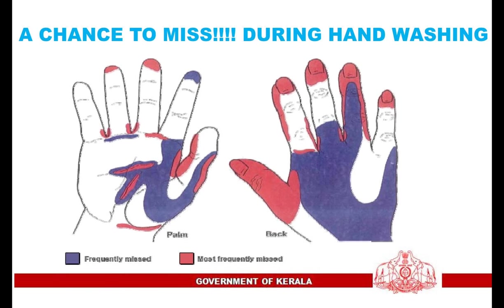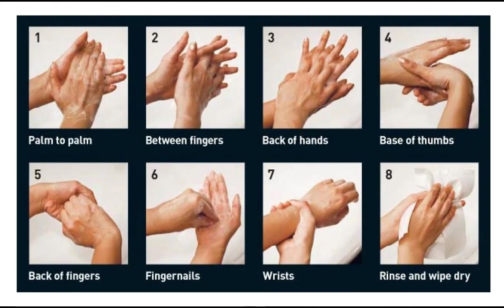There are chances to miss areas during hand washing. Look at the diagram: violet color-coded areas are frequently missed areas during hand washing, and special care should be taken with red color-coded areas because they are the most frequently missed. Now go through the steps of hand washing.